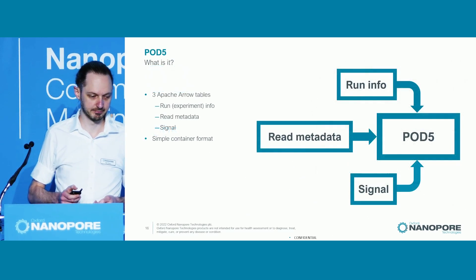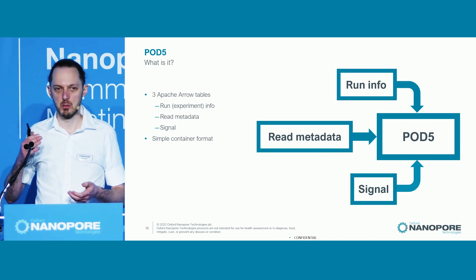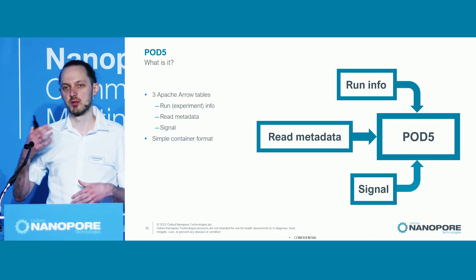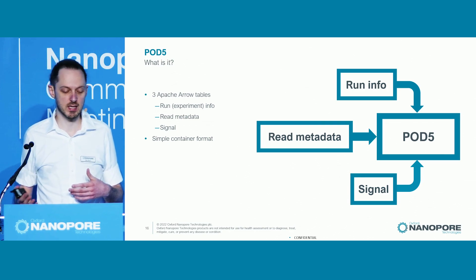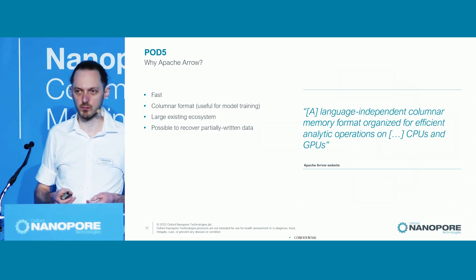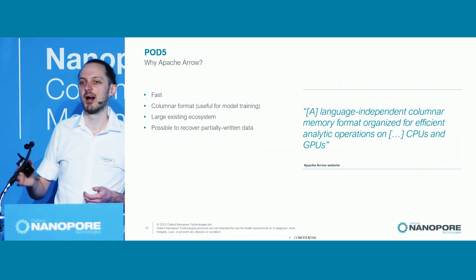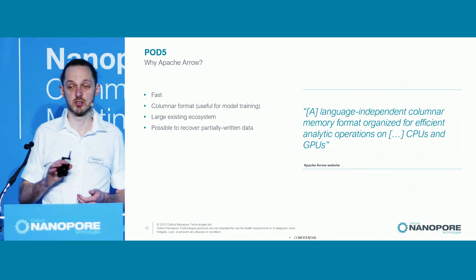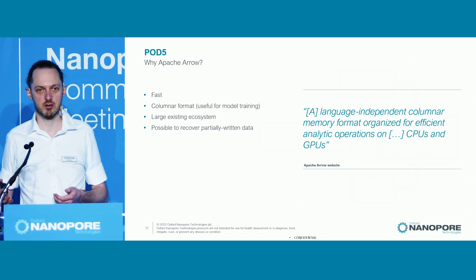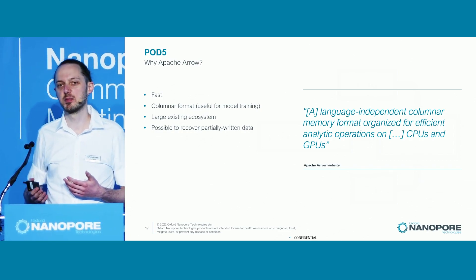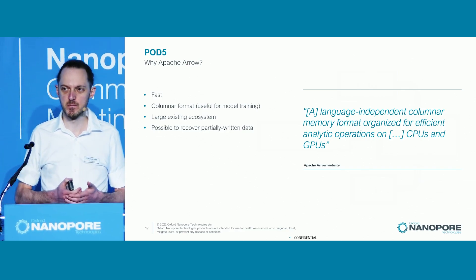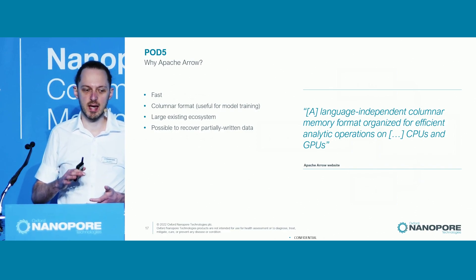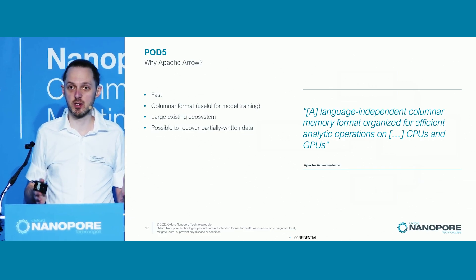So what is Pod5? It's basically three Apache Arrow tables bundled up into a simple container format: the metadata for the reads, run-level information about the Minnow runs the reads came from, and the signal data. Why Apache Arrow? To quote from its website, Arrow is a language-independent columnar memory format organized for efficient analytic operations on modern hardware such as CPUs and GPUs. It's capable of zero-copy reads — it's fast. It has a columnar layout making many operations very efficient, a large existing ecosystem (you can load Arrow data into pandas or even MATLAB), and with some care in how data is written, it's straightforward to recover most of a partially written file.